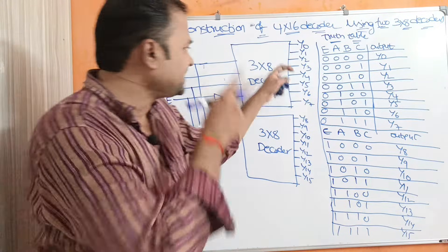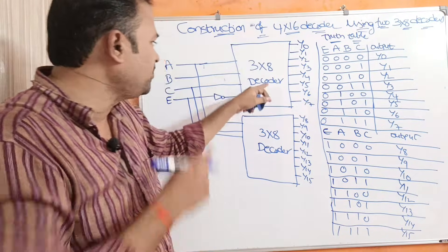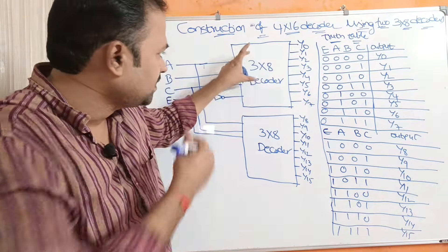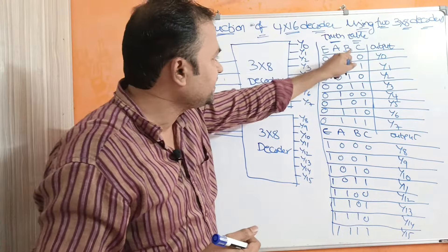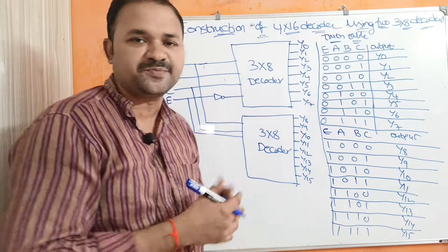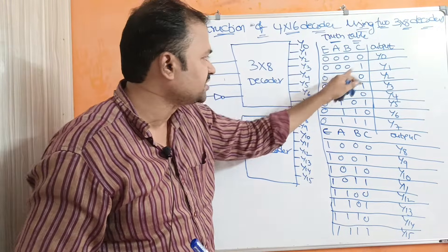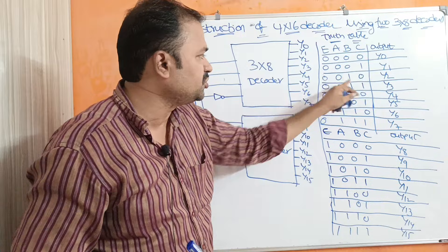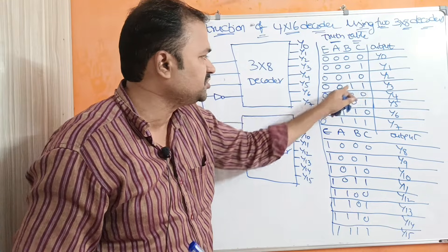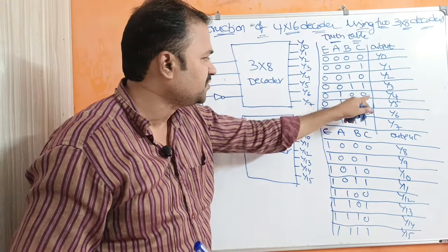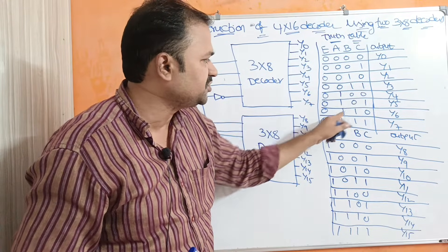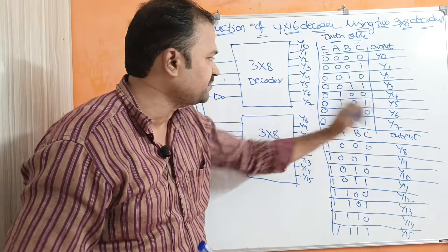Let us see the truth table for the 3 by 8 decoder. Here A, B, C are the inputs, with the normal input combinations: 000, 001, 010, 011, 100, 101, 110, 111 — giving eight combinations in total for the three input variables.